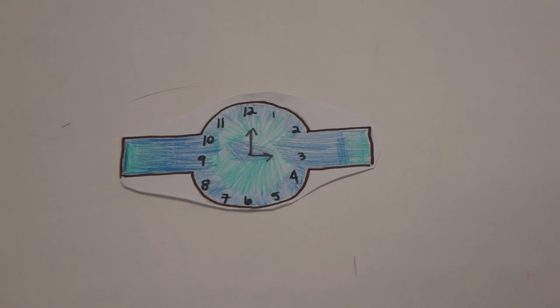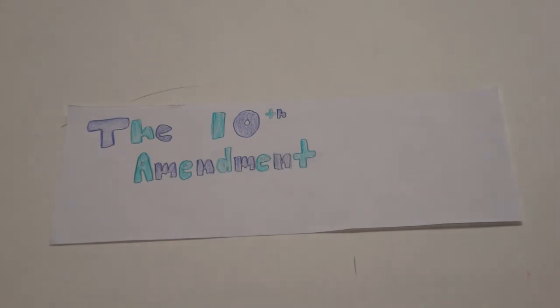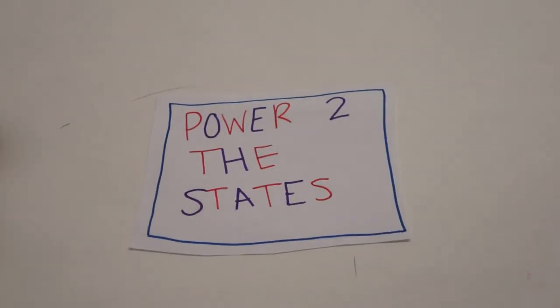Now we are going straight to the Tenth Amendment, which says if anything does not say the federal government has power over it, then all the power goes to the state and the people.